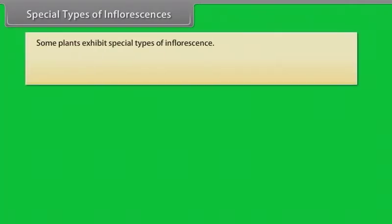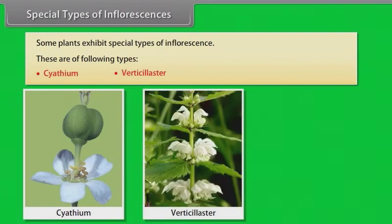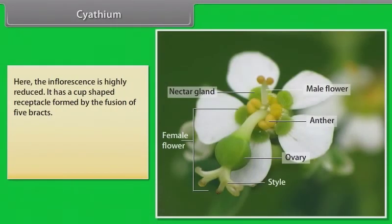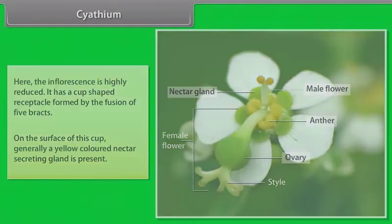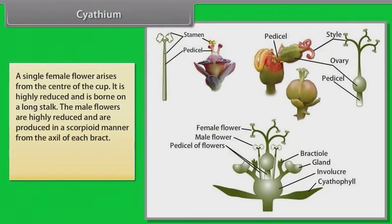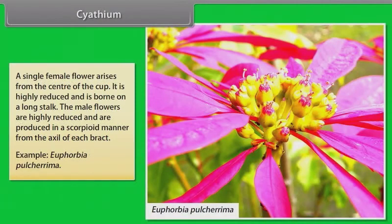Some plants exhibit special types of inflorescence: Cyathium, Verticillaster, and Hypanthodium. In cyathium, the inflorescence is highly reduced. It has a cup-shaped receptacle formed by the fusion of five bracts. On the surface of this cup, generally a yellow-colored nectar-secreting gland is present. A single female flower arises from the center of the cup; it is highly reduced and is borne on a long stalk. The male flowers are highly reduced and are produced in scorpioid manner from the axil of each bract. Example: Euphorbia pulcherrima.